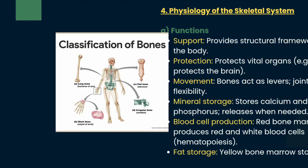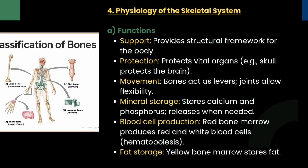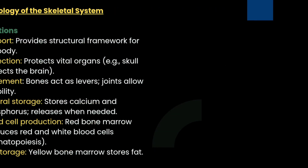Next, coming to the physiology of the skeleton. The functions are: support — providing a structural framework for the body; protection — protecting vital organs; movement — joints allow flexibility; mineral storage — storing calcium and phosphorus; blood cell production; and fat storage — yellow bone marrow stores fat.